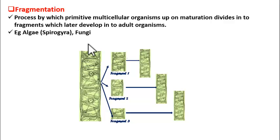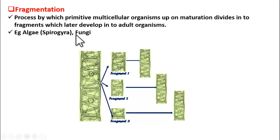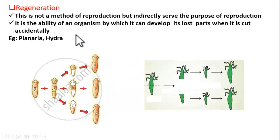Good morning students. Today let us learn about the next two methods of asexual reproduction — fragmentation and regeneration.